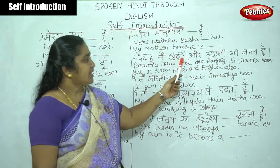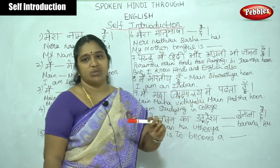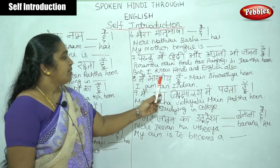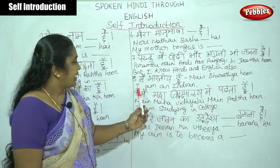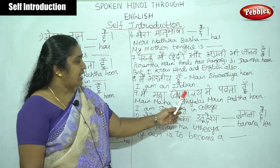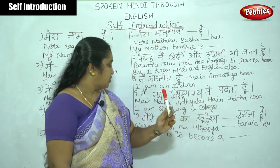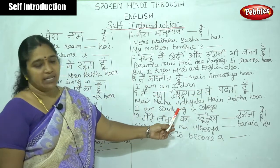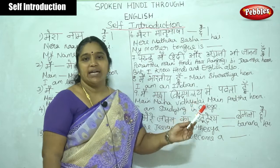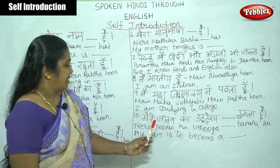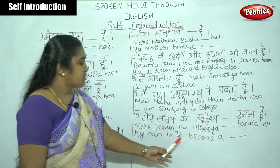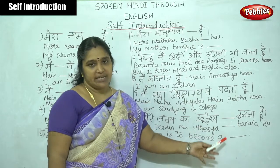'Parantu, mai Hindi aur Angrezi bhi jaanta hoon' — But I know Hindi and English also. 'Mai Bharatiya hoon' — I am an Indian. 'Mai maha vidyalai me padta hoon' — I am studying in college. We can also write the name of our college here. 'Mere jivan ka utteshya dash banana hai' — My aim is to become a doctor, engineer, or teacher — anything you want to be.